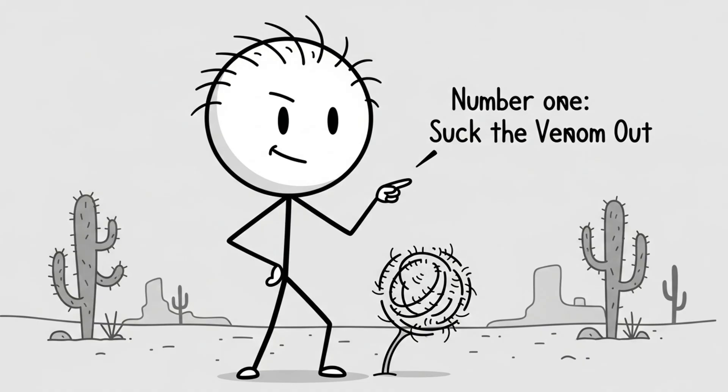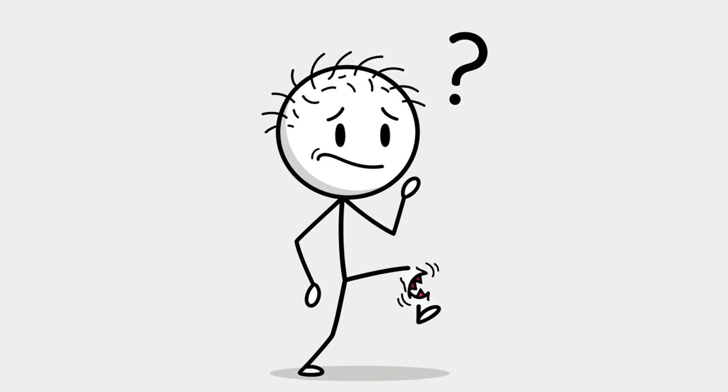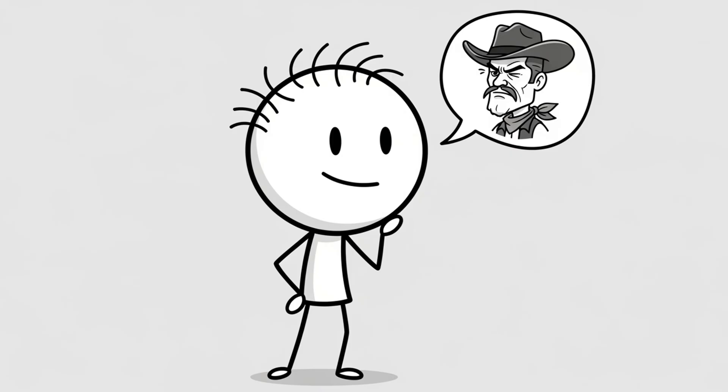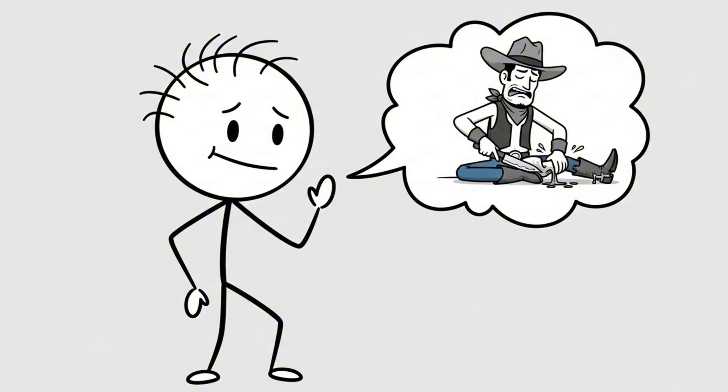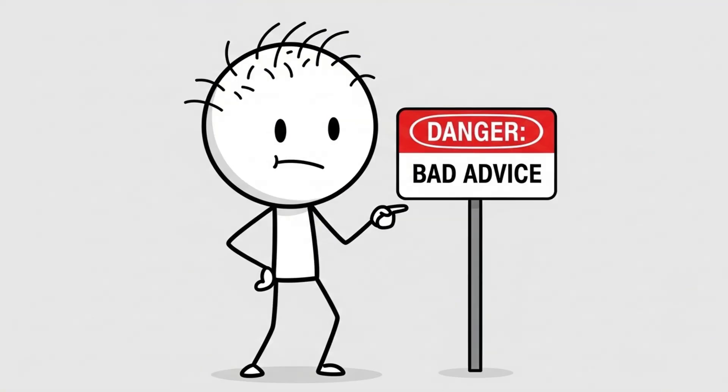Number 1. Suck the venom out. You get bitten by a snake. Panic sets in. What do you do? Obviously, you remember that classic cowboy logic. Cut the bite and suck out the venom like a noble idiot in a western. Yeah, don't.